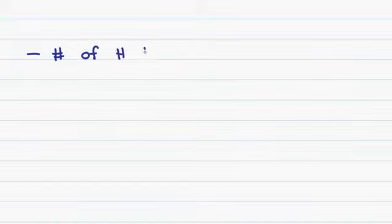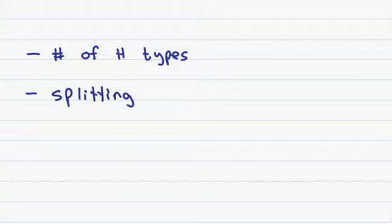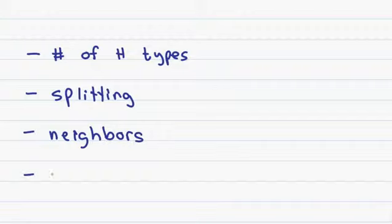However if you understand what I show you, you'll be able to take this information and apply it to more complex examples. The first thing you want to look at is the number of hydrogen types. Then you want to look at the splitting of the peak, you want to identify the number and types of neighbors, and lastly you want to identify the cause of the shift.